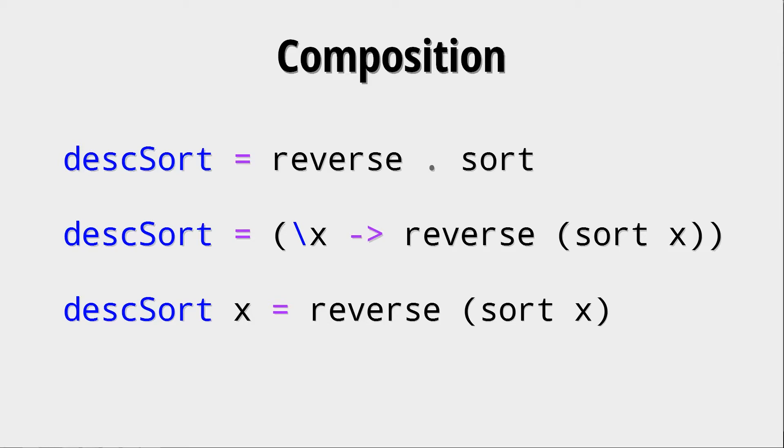If you use the equivalence of this dot operator, you get this anonymous function definition and if you now take the free variable x and just put it into the argument list of descending sort, we see why this is true. We can also see that we didn't need any arguments in the descending sorting function before because we get a function back that already needs one argument from the composition.